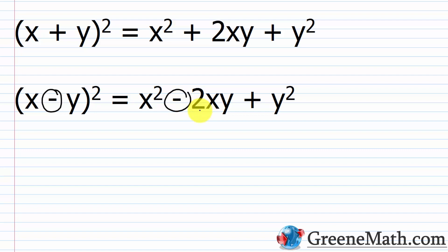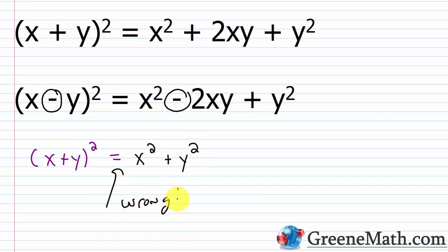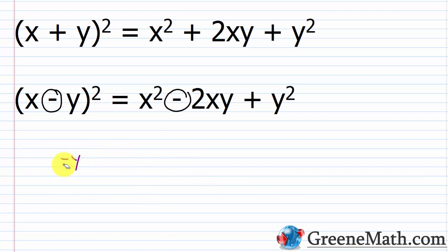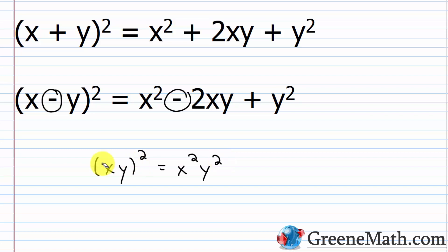A common mistake: students say x plus y squared equals x² plus y². This is wrong — do not do this. You cannot distribute an exponent over addition. What you're thinking of is multiplication: if you had x times y, all squared, then yes, you get x²y². But with addition you have to expand it. Squaring means writing x plus y times x plus y — two copies.